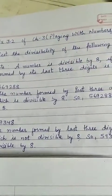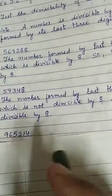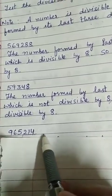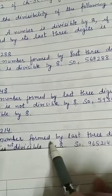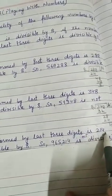Let's do one more part, it's 5th part. The number is given to you, 9,65,214. Now, the number formed by the last three digits is 214.